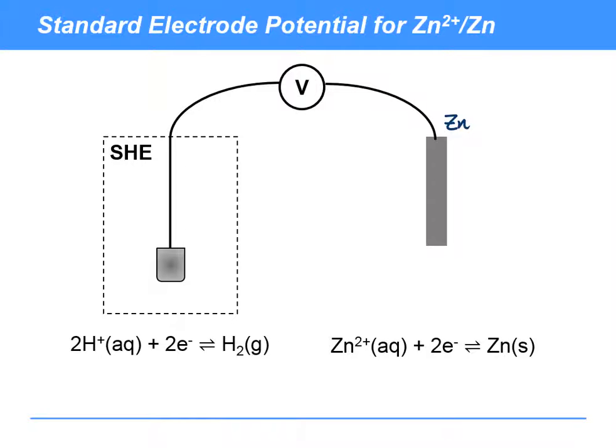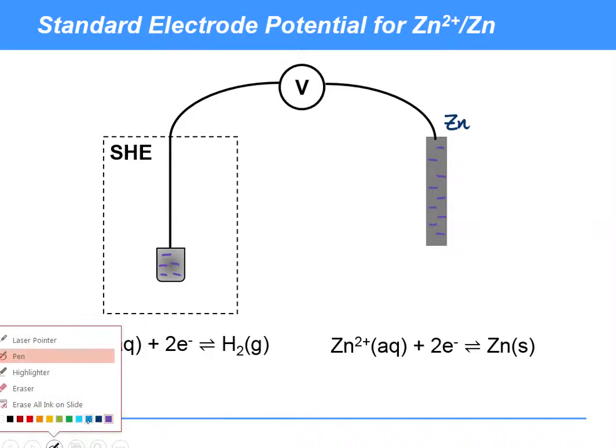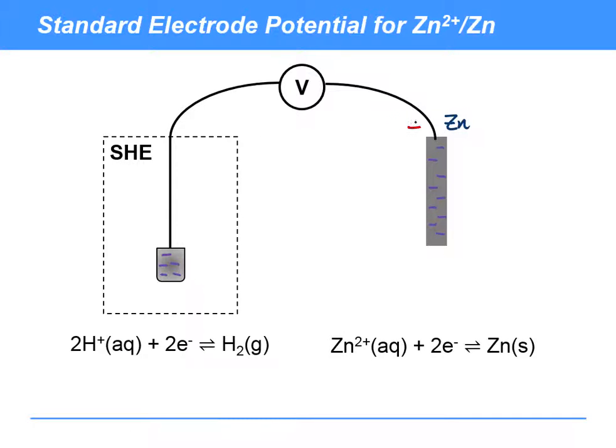What we actually find is that because zinc, zinc 2+ has a lesser tendency to gain these electrons, there actually end up more electrons here on the zinc than there are on the piece of platinum that's part of the standard hydrogen electrode. As a result of that, we'd say that the zinc is therefore more negative, so it becomes the negative pole, and the standard hydrogen electrode is the positive terminal in this electrochemical cell that's been set up. The voltmeter tells us exactly the difference in potential between them, and it turns out that that is minus 0.76 volts in this case. So we would say that the standard electrode potential for this Zn2+/Zn redox system is minus 0.76 volts.